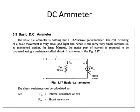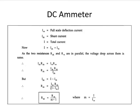For a large current, the major part of the current is required to be bypassed using a resistance — this resistance is called the shunt. The shunt resistance can be calculated as follows. R_M is the internal resistance, R_SH is the shunt resistance, I_M is the full scale deflection current — that is the current flowing through the basic meter — I_SH is the shunt current, and I is the total current.